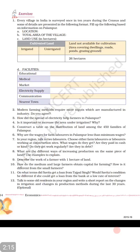Question seven: In your area, talk to two laborers — either farm laborers or those working at a construction site. Unse baat kijiye: kya unhe sarkar dwara tay ki gayi wages milti hai? Kya unhe cash mein milti hai? Kya unhe daily kaam mil jaata hai ya kabhi bina kaam ke rehna parta hai? Kya wo debt mein hain — yaani unki income kam hai aur daily kharche zyada hain?